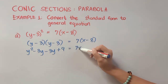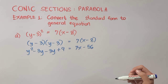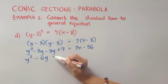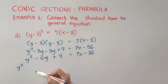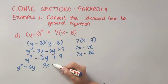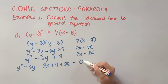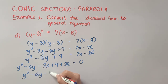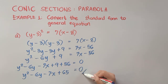Distributing 7 gives 7x, and 7 times negative 8 is negative 56. On the left side we have like terms: negative 3y and negative 3y combine to negative 6y. A general equation must have 0 on one side, so transposing: y² minus 6y minus 7x plus 9 plus 56 equals 0. Simplifying, 9 plus 56 is 65, giving us y² − 6y − 7x + 65 = 0 as our final answer.